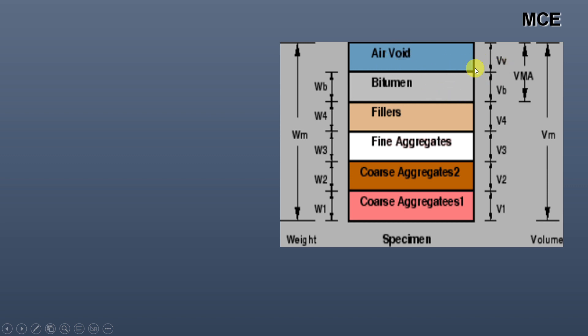The volume occupied by air is the volume of the voids and volume occupied by the bitumen is Vb. The sum of volume of voids plus volume of bitumen is equal to the voids in the mineral aggregate. Total volume of the mix is Vm and total weight of the mix is Wm.